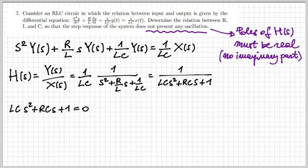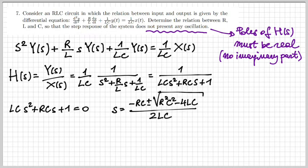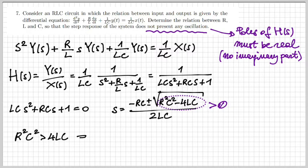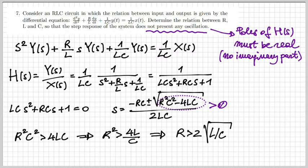We look at the roots of the denominator and find two values for s. These depend on the values of R, C, and L, and in order for those roots to be real we require the content of the square root to be positive. Imposing that condition, we find that R must be larger than twice the square root of L over C.